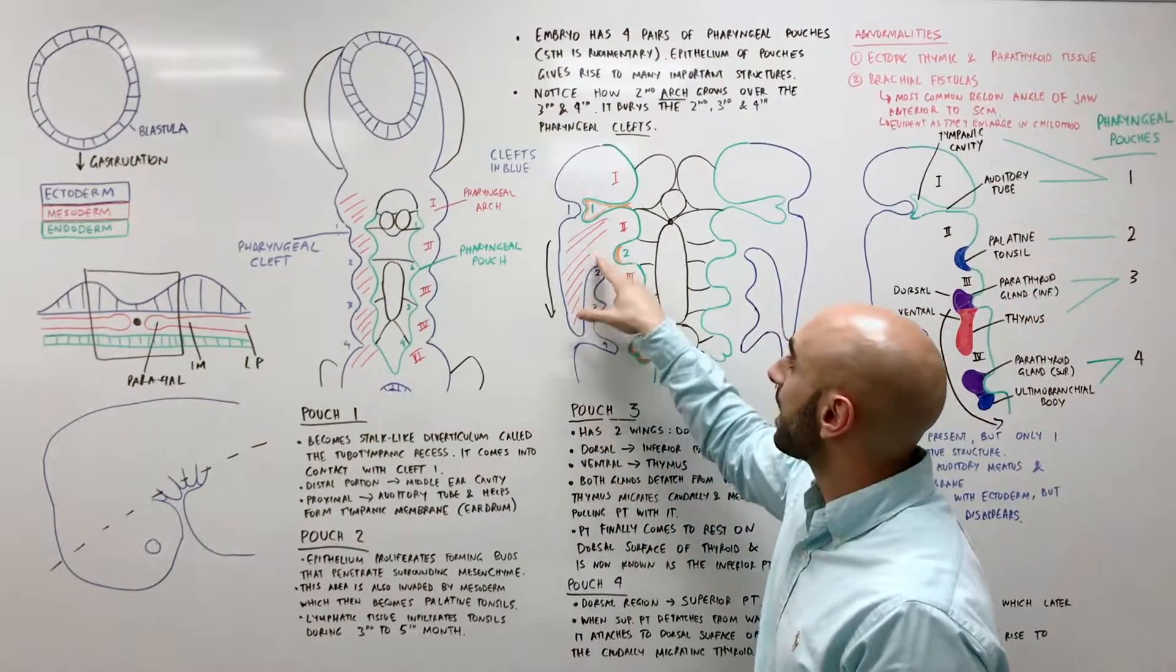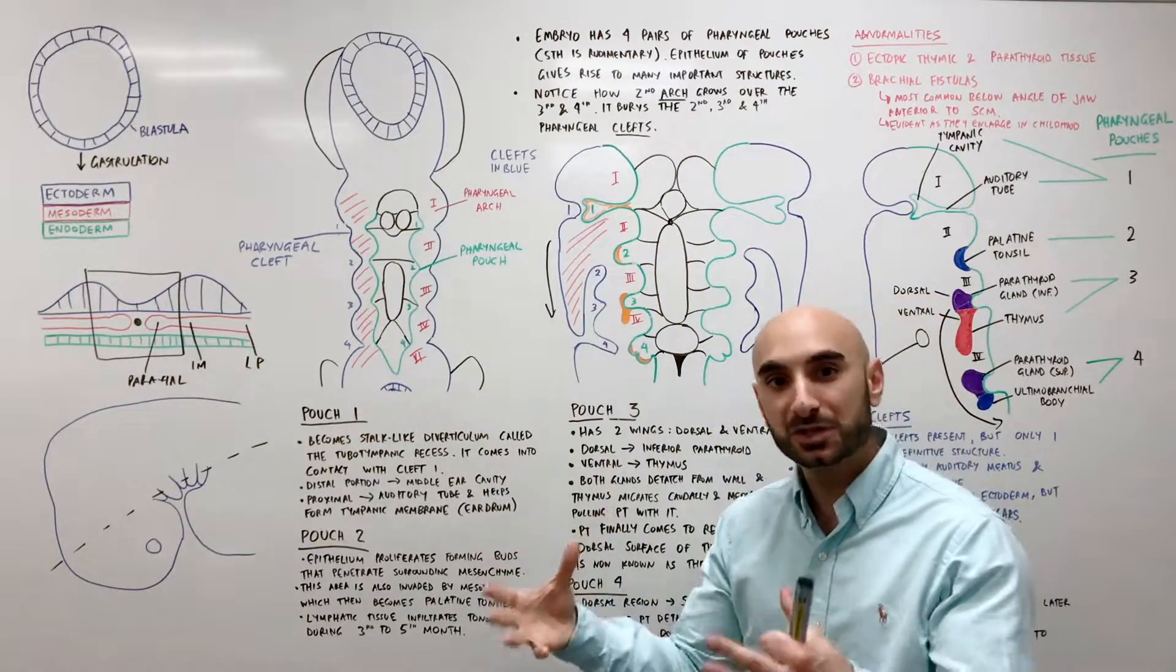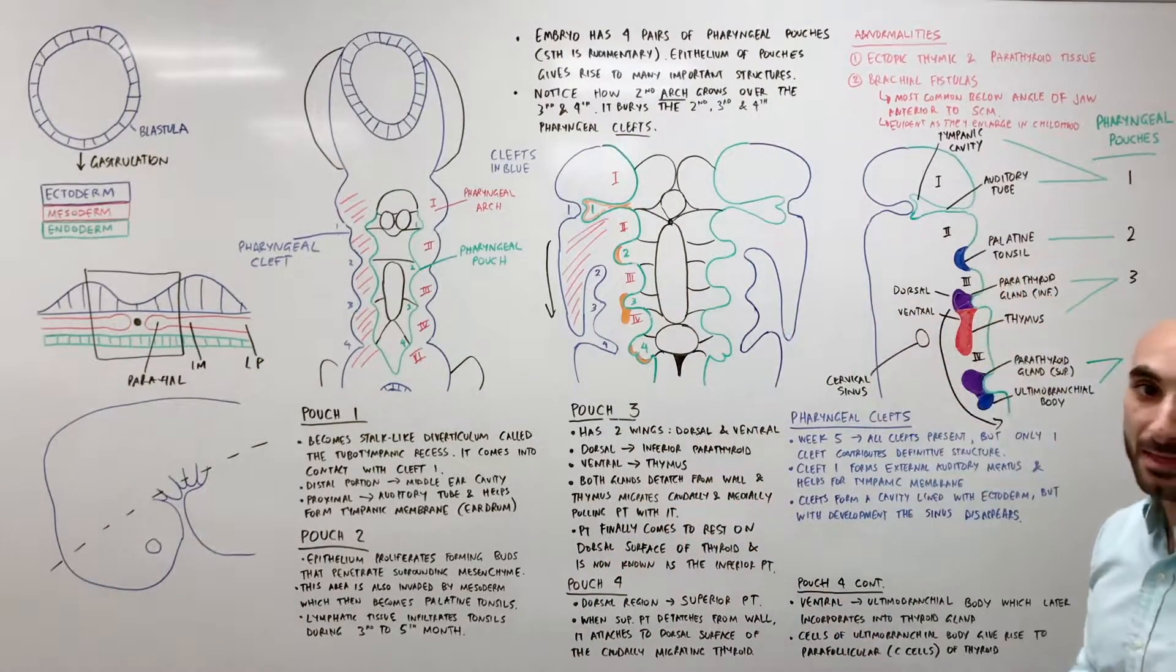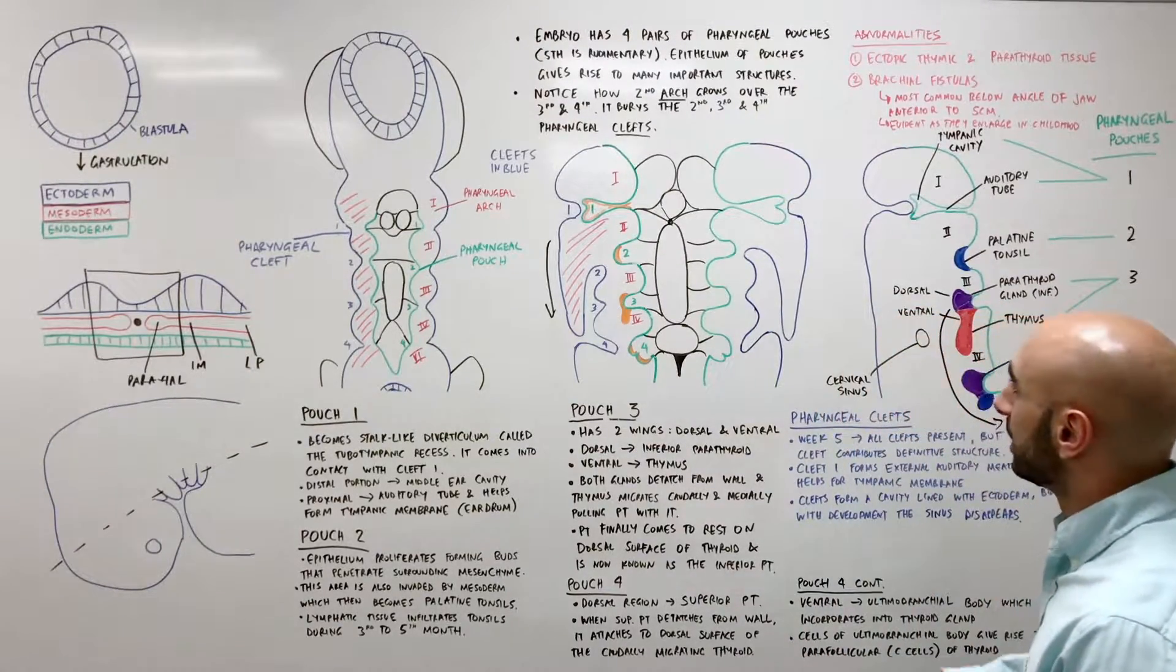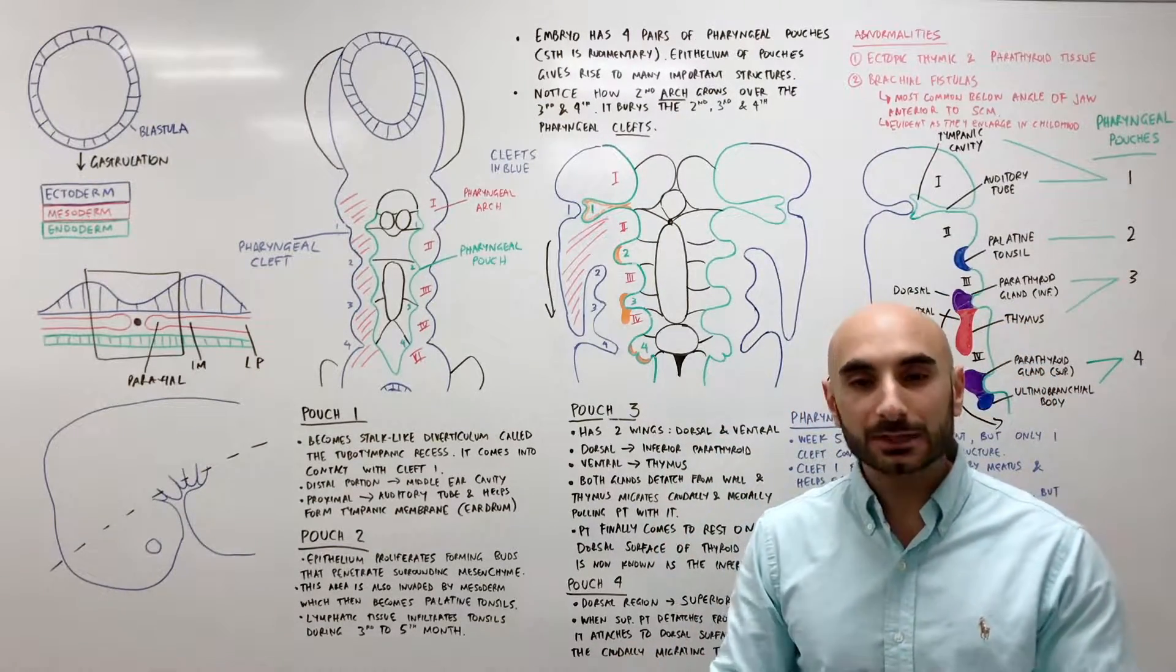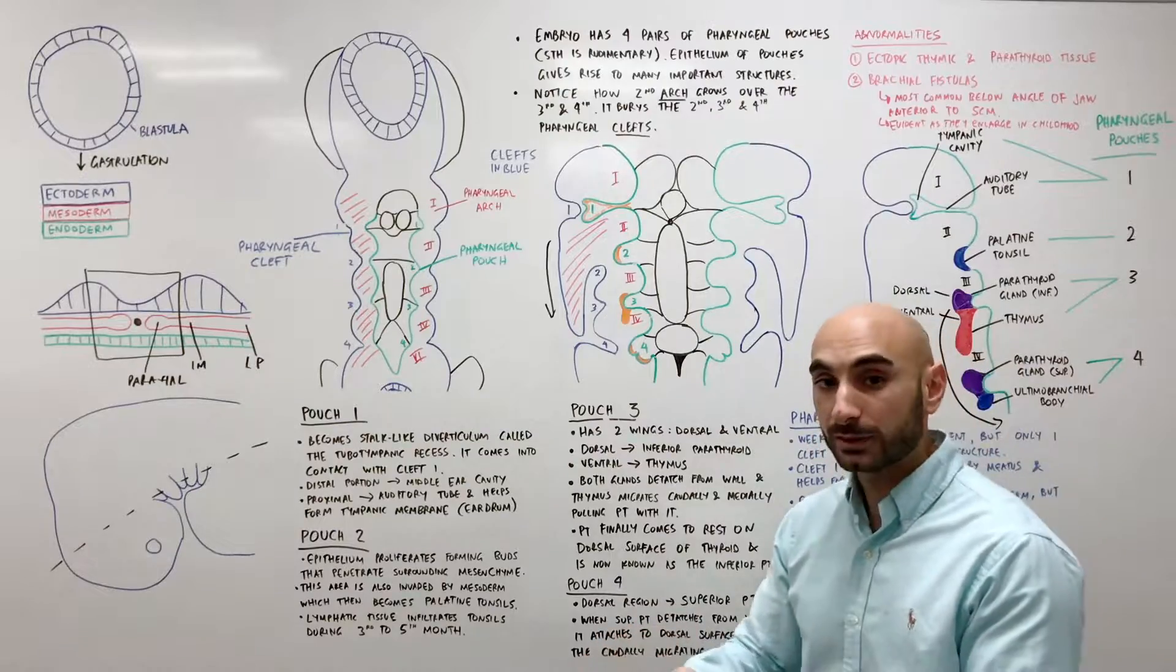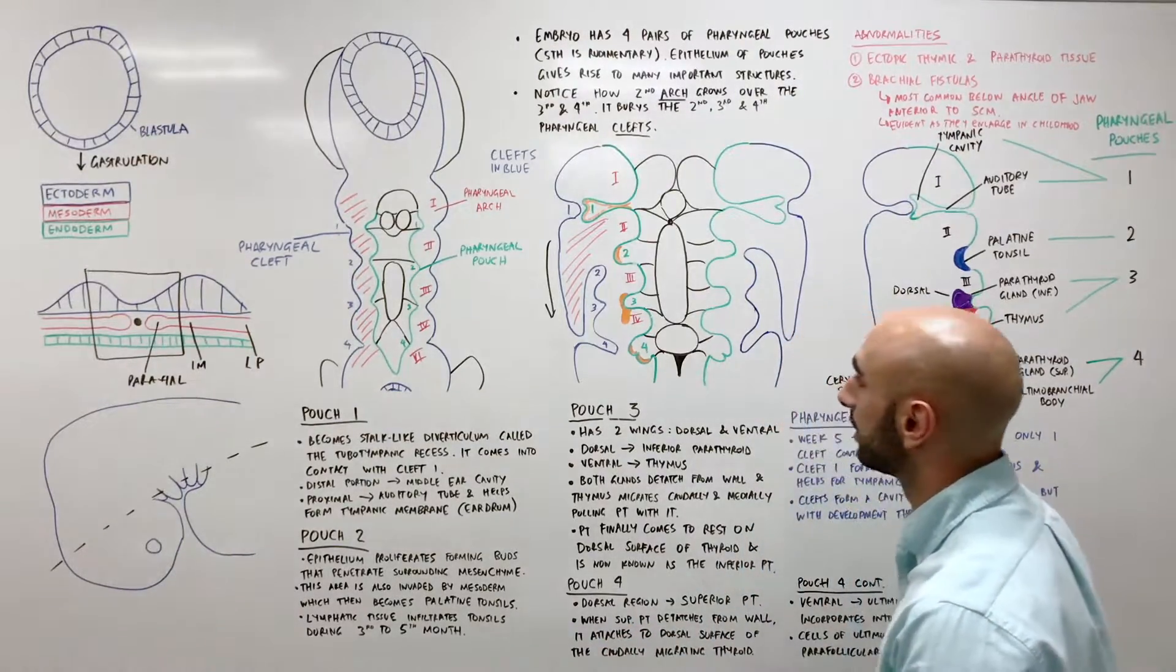Additionally, surrounding mesoderm infiltrates this mesenchyme too and helps to contribute to the structure. So we can say that pouch 2 helps to form the palatine tonsil rather than it being solely responsible for its creation. And in between the 3rd to 5th month of development, lymphatic tissue will invade the tonsil and will as a result help to form its tissue serving as the immune system.